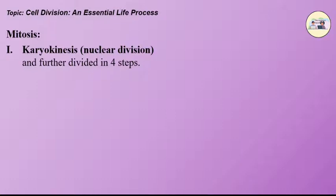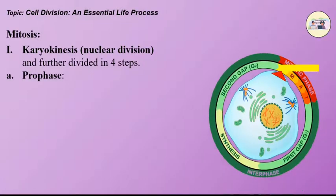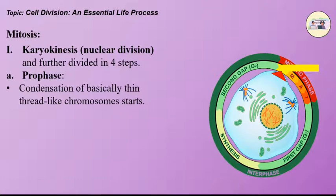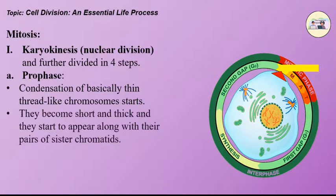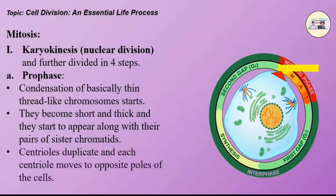The first step is prophase. Condensation of basically thin thread-like chromosomes starts. They become short and thick and they start to appear along with their pairs of sister chromatids. Centrums duplicate and each centrum moves to the opposite pole of the cell.